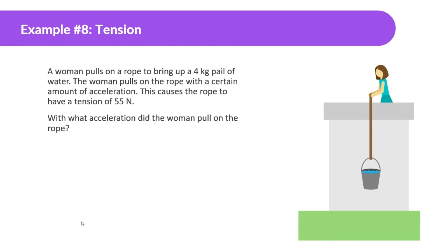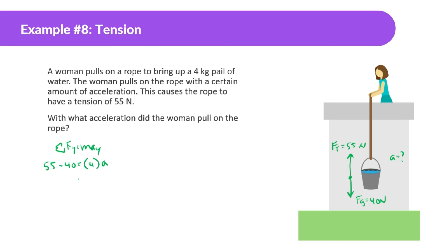Similar question: a woman pulls on a rope to bring up a 5 kilogram pail of water with a certain acceleration, causing the rope to have a tension of 55 newtons. With what acceleration does the woman pull on the rope? We know the force of gravity is 50 newtons and tension is 55 newtons upward. Using sum of forces in Y equals mass times acceleration: 55 minus 40 divided by 4 — since the mass is 4 kilograms — gives approximately 3.75 meters per second squared.